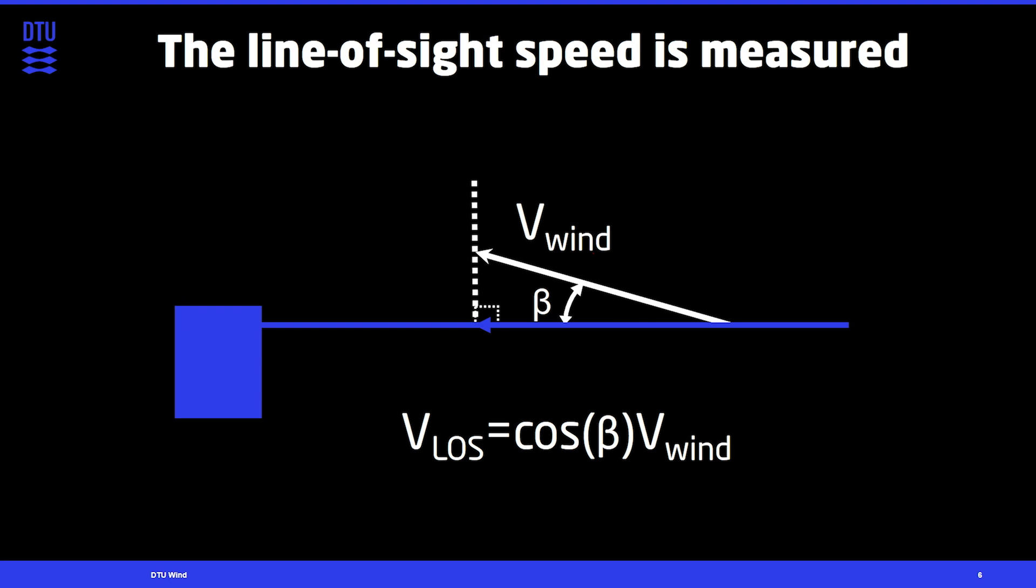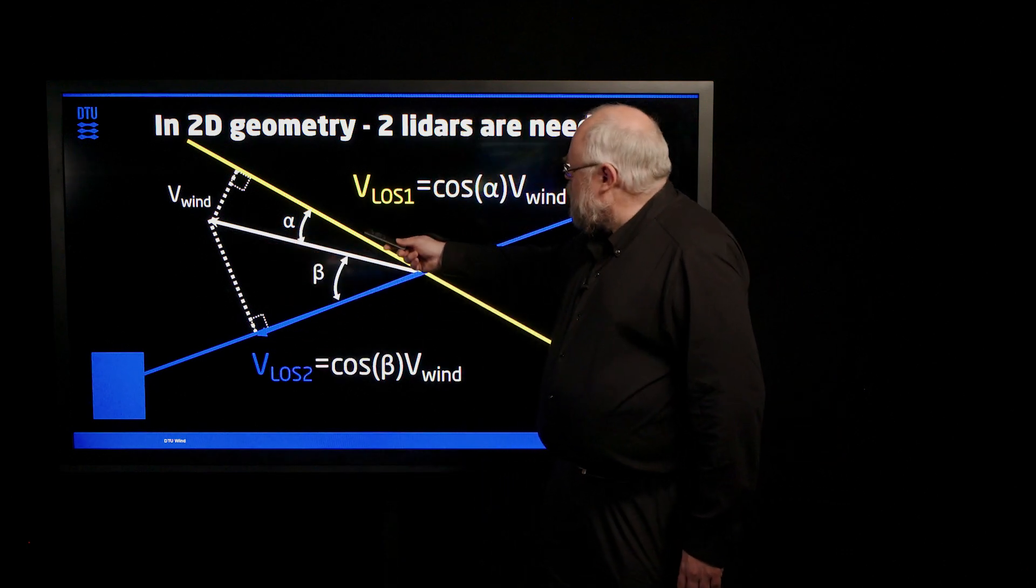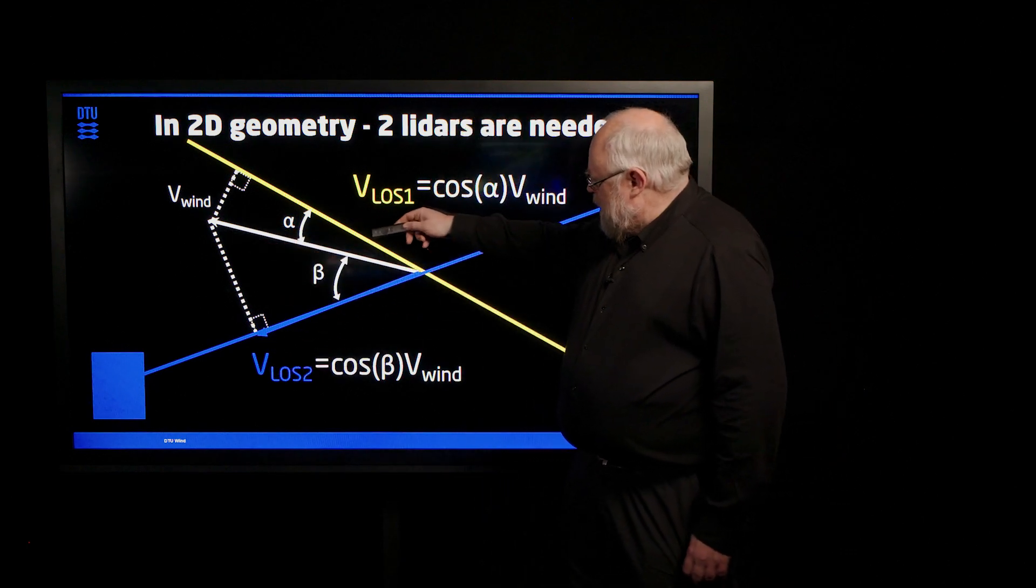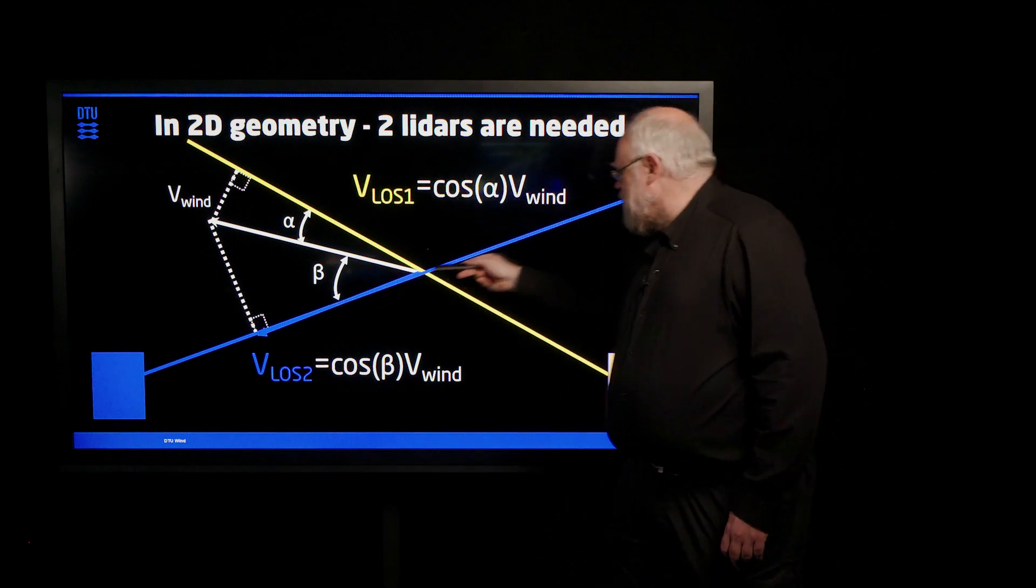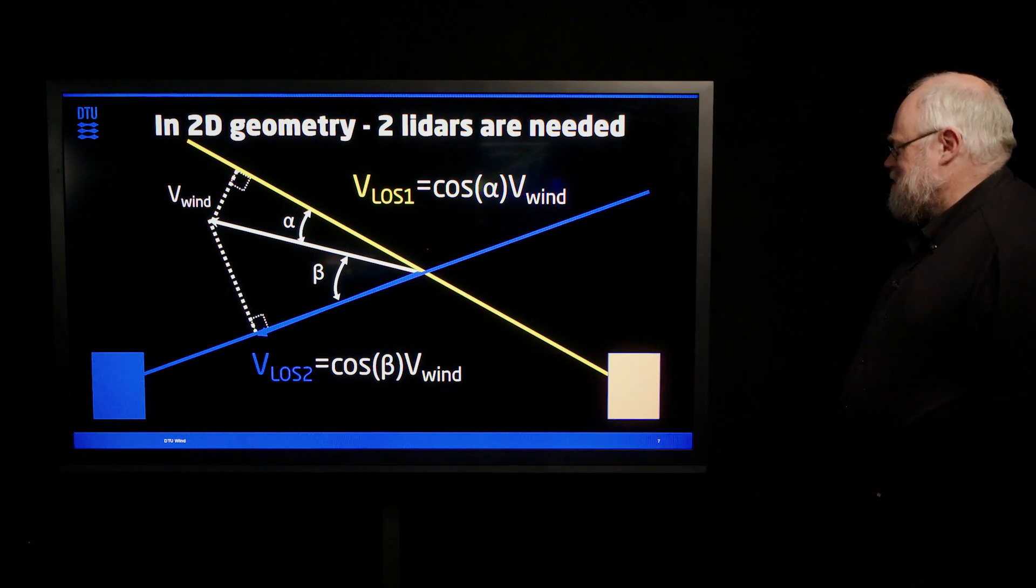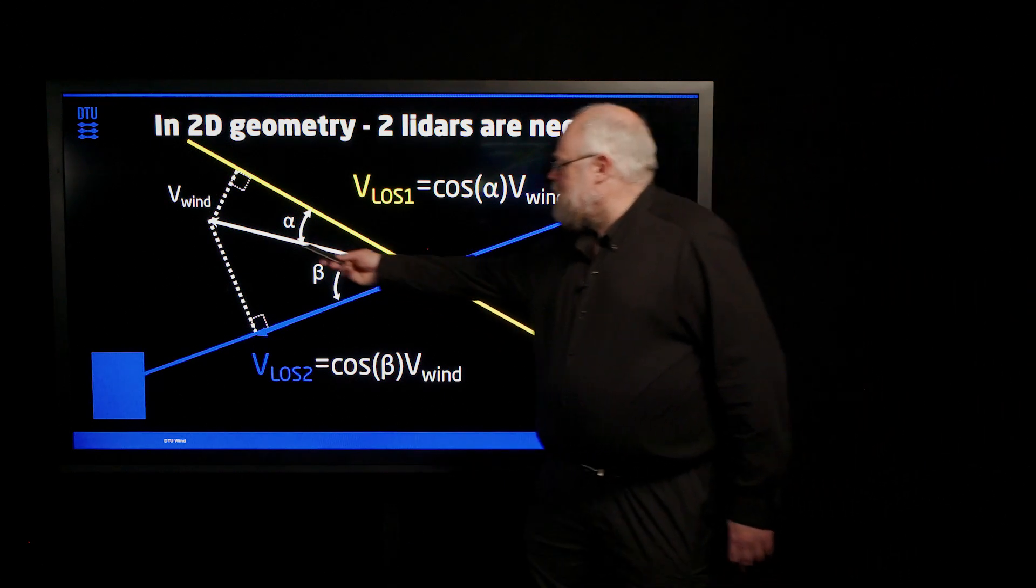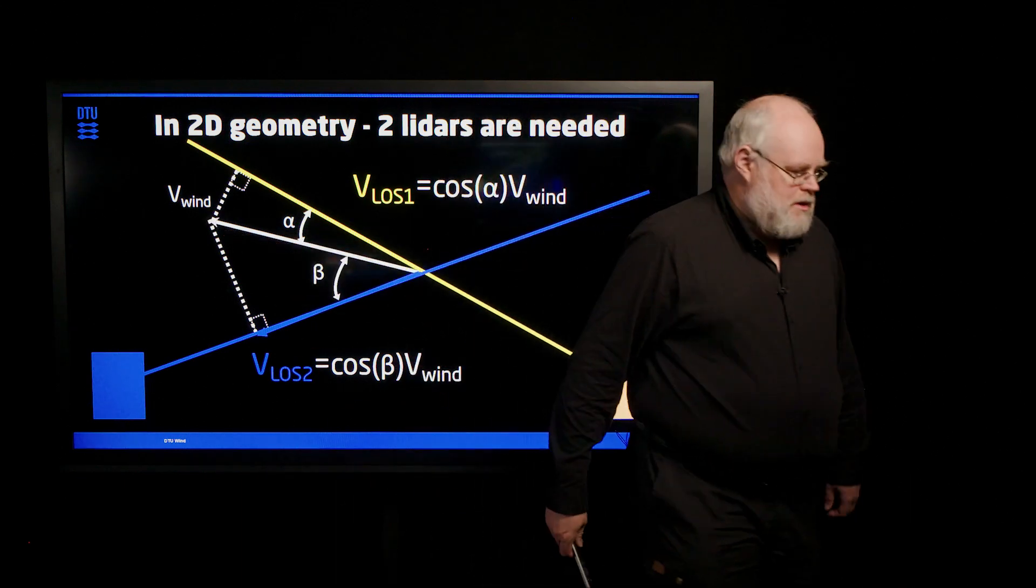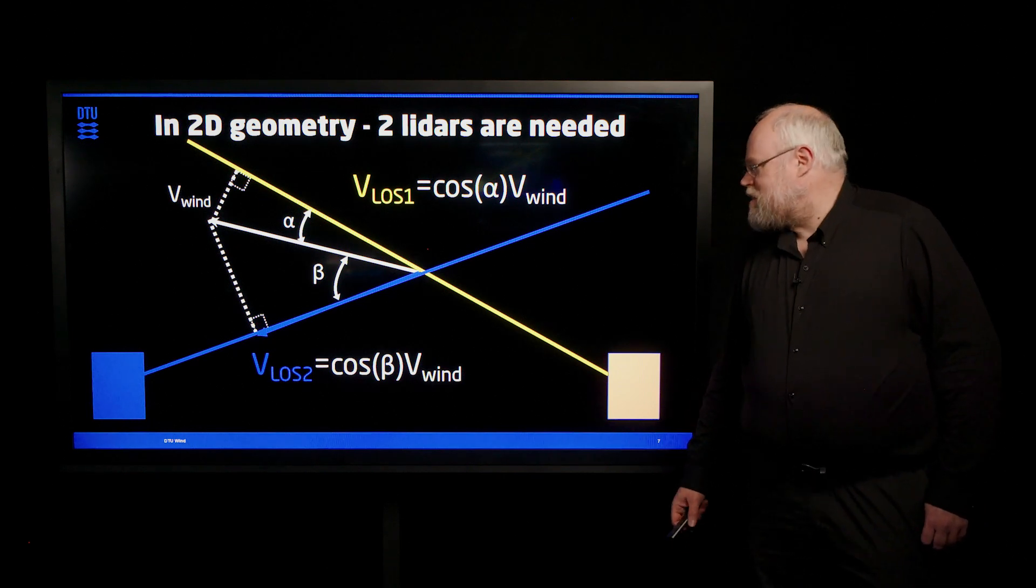What we need is several lidars. In this case we have two lidars and they are trying to measure this wind vector here. Number one measures the projection of this onto its line of sight. And the same goes for the other lidar. It measures the wind along that line of sight. And then you have sort of fixed the location of this wind vector.